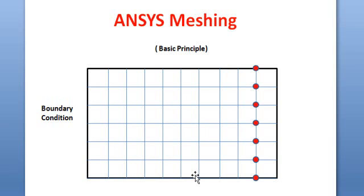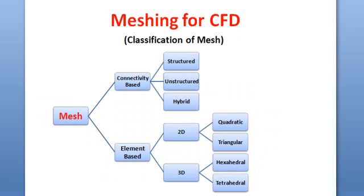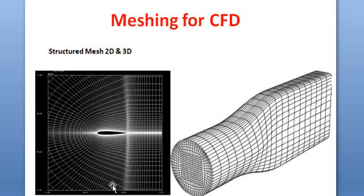Based on the boundary conditions, the solver will solve iteratively and give you a solution. It takes the boundary condition and computes the solution — that is why we need to mesh our domain. Looking at the classification of meshes, the whole mesh can be divided into two different types: one based on connectivity and another based on element type.